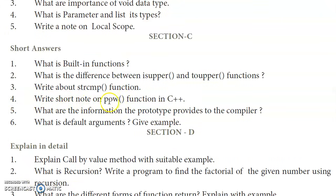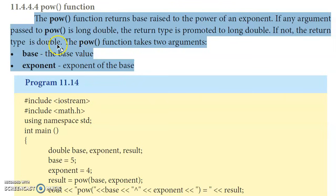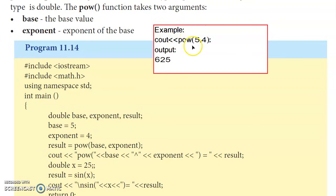Fourth question: write a short note on the power function in C++. From page 190. The power function takes two arguments — base value and exponent value. It returns the base raised to the power of the exponent. If arguments are long double, the return type is long double; otherwise it is double.